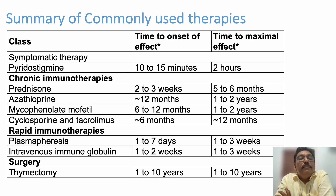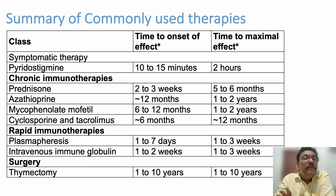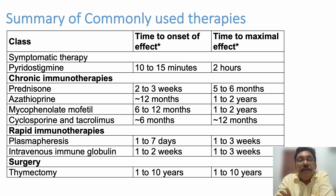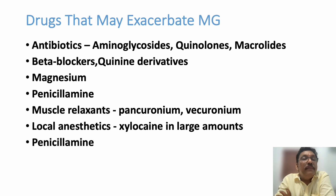Summary of common treatments for myasthenia gravis: symptomatic treatment with pyridostigmine; chronic immunotherapy with prednisolone, azathioprine, mycophenolate mofetil, cyclosporine, or tacrolimus; rapid emergency treatment with plasmapheresis or IVIg; and surgery — thymectomy — only if there is a thymic tumor.